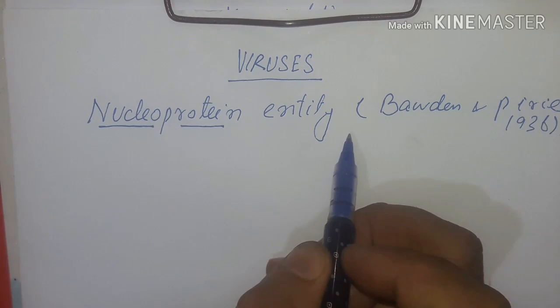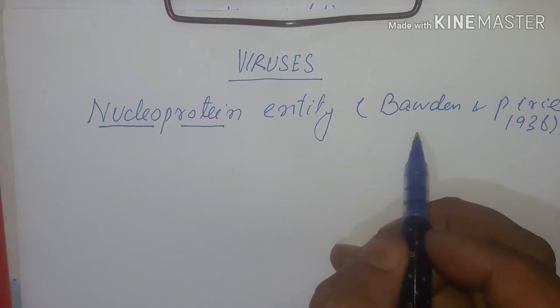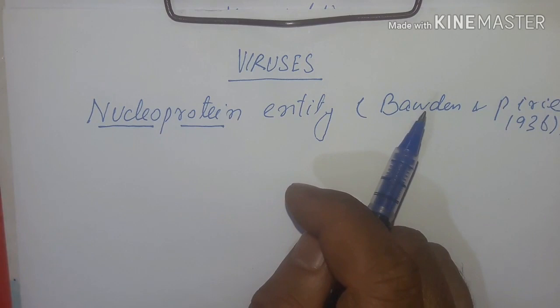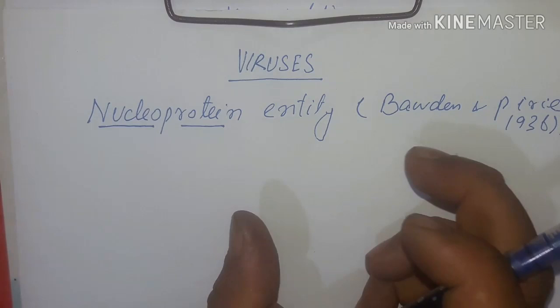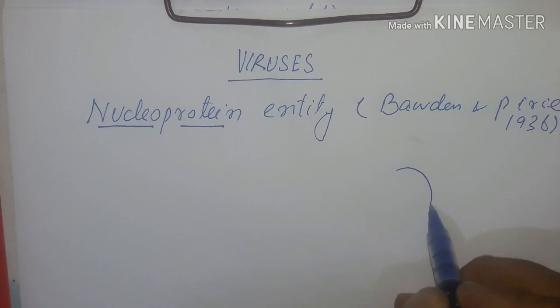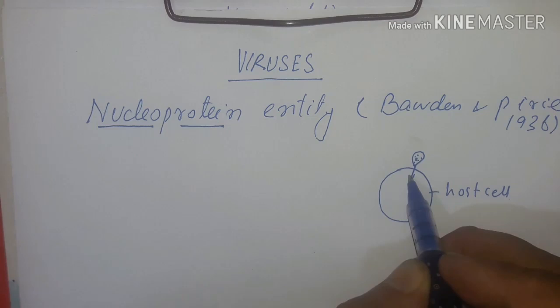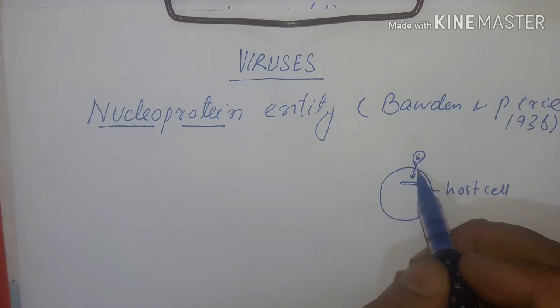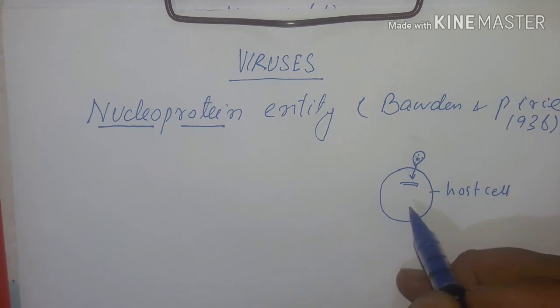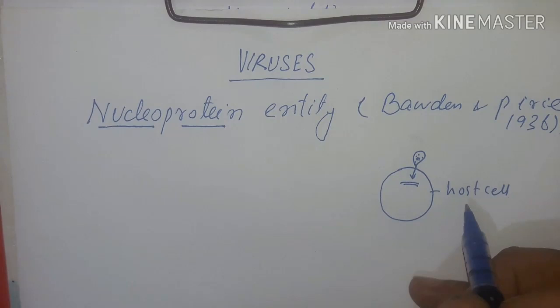A virus is capable of multiplication by taking over the cellular machinery of the host cell, because it cannot multiply on an artificial medium. It uses the host cell but without involving growth and division. So virus is a nucleoprotein entity that takes over cellular machinery of the host for multiplication.